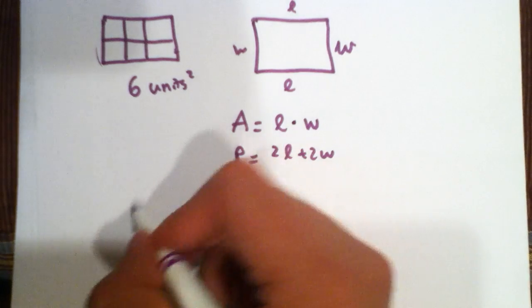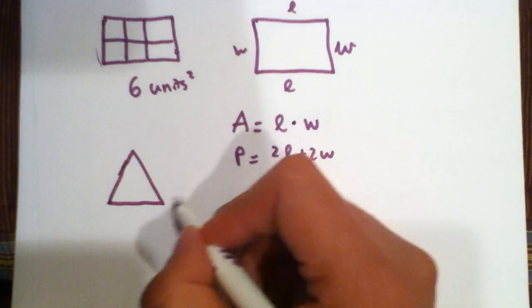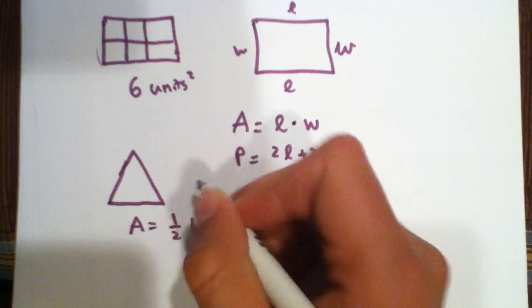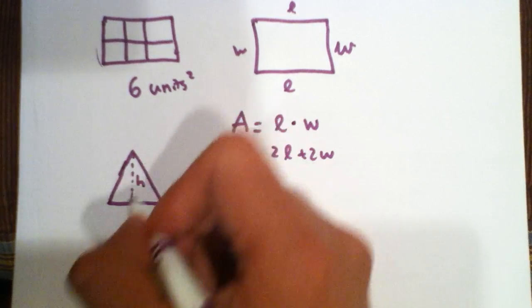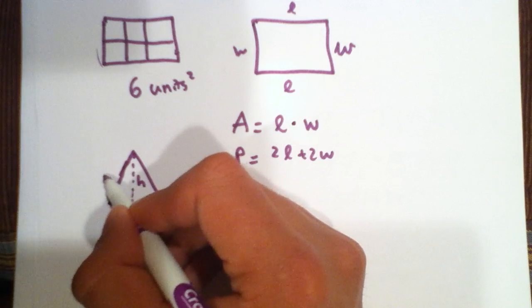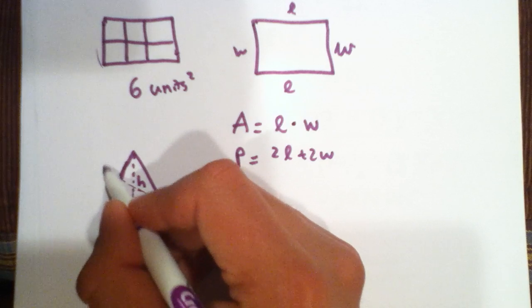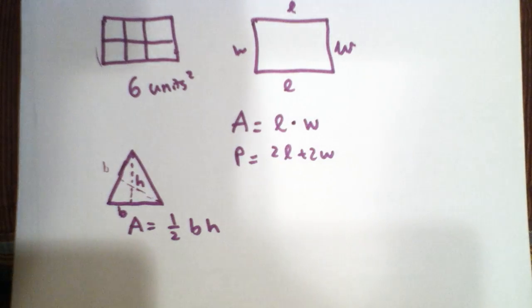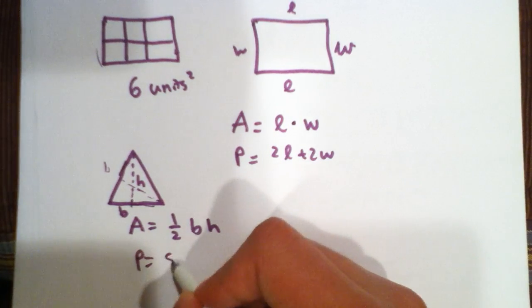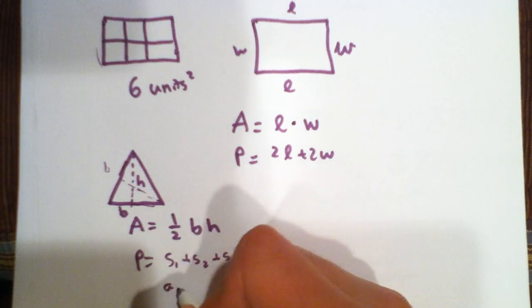Now, triangles. The area for a triangle is 1/2 base times height. Here is the height and this would be the base. You could do it from here too. If you were given this as the base, the height would be going this way and that would be the base. The perimeter is just adding up all three sides. The perimeter will be S1 plus S2 plus S3 or if they're labeled it will be A plus B plus C.